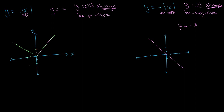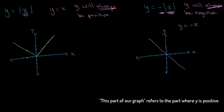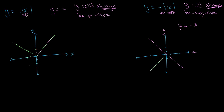We know that in y = −|x|, y will always be negative, so the part of the graph where y is positive cannot exist. We take the reflection of that positive portion in the x-axis. So the point (−1, 1) becomes (−1, −1) and (−2, 2) becomes (−2, −2). The final modulus graph for y = −|x| is an inverted V-shape.